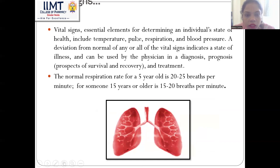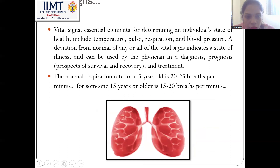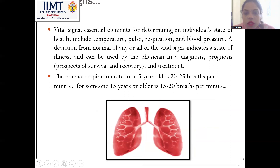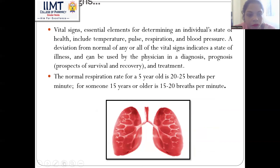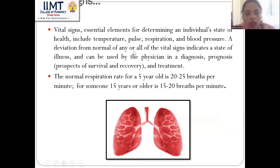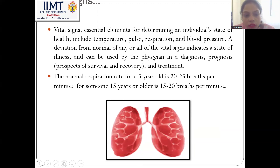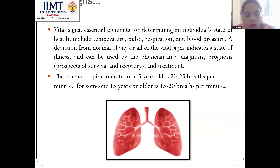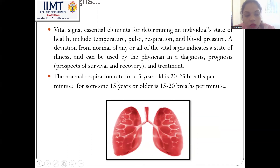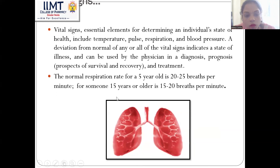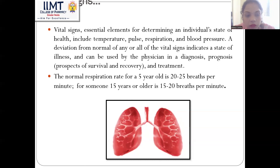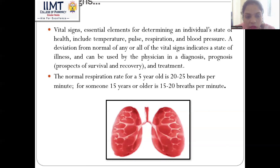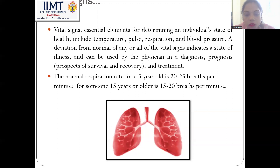The vital signs or essential elements for determining health status include temperature, pulse, respiration, and blood pressure. A deviation from any of these vital signs indicates illness and guides diagnosis and treatment. The normal respiration rate for a five-year-old is 20 to 25 breaths per minute and for a 15-year-old it is 15 to 20 breaths per minute.